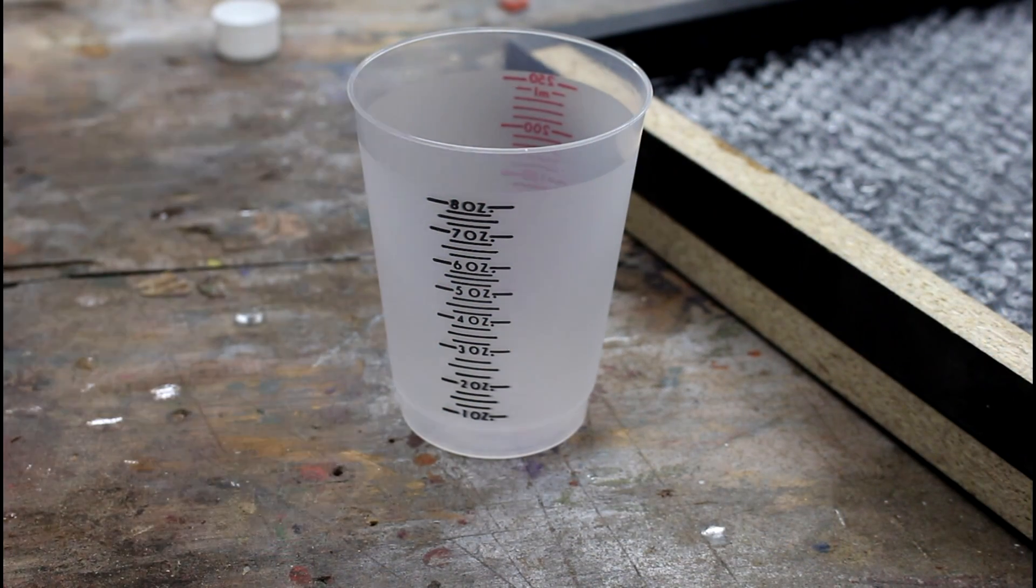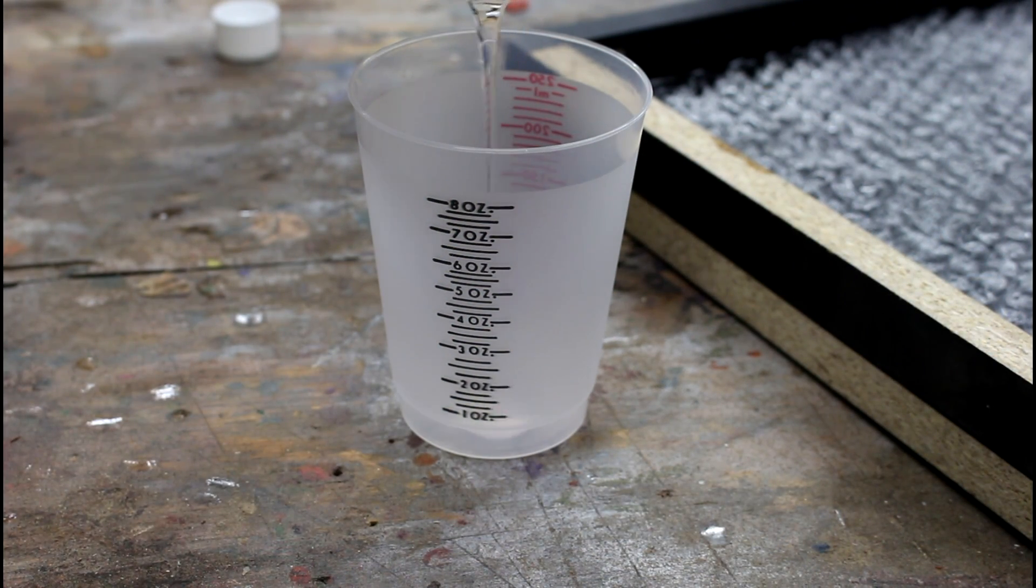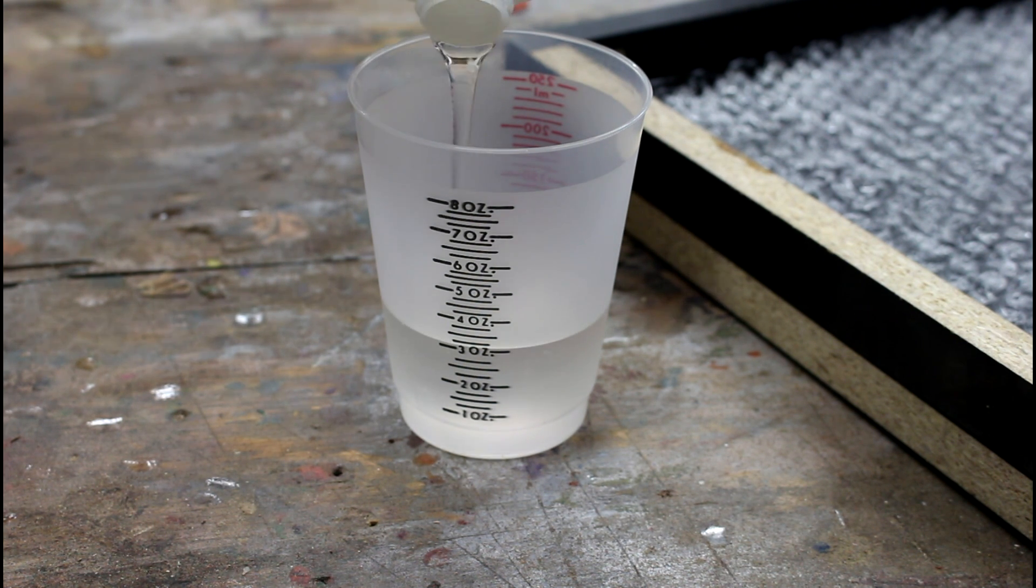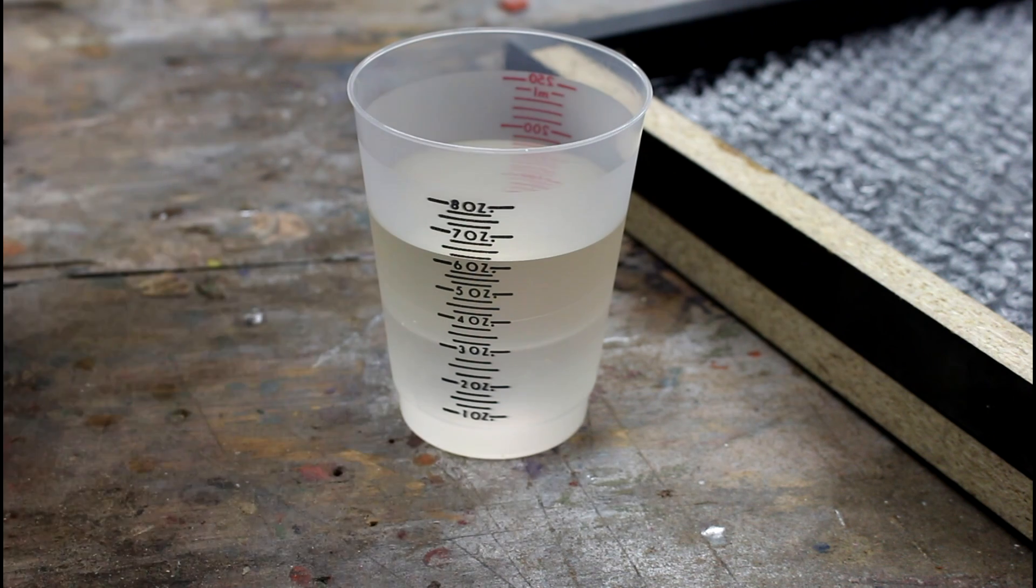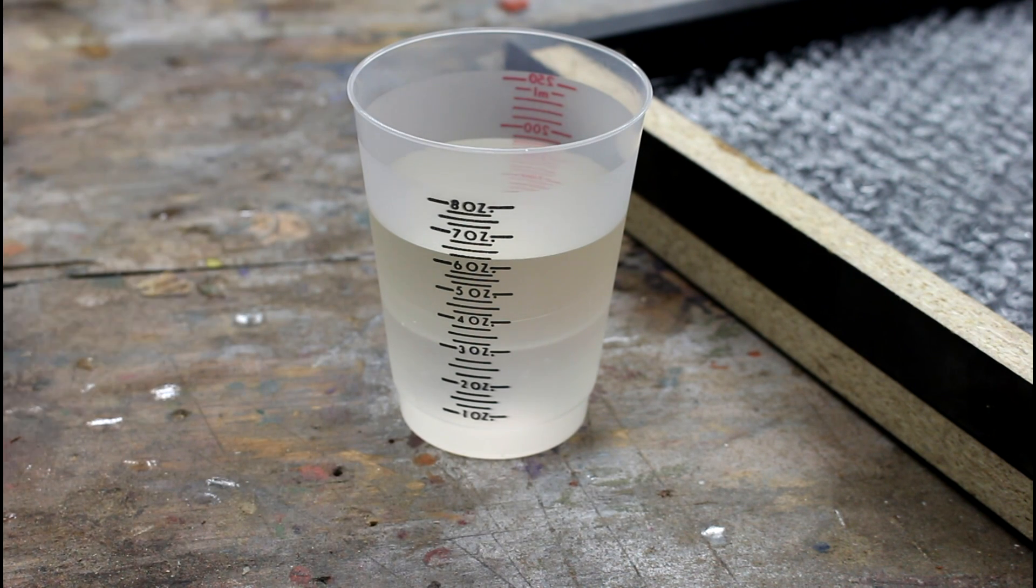I'm going to mix up six ounces of resin, which should be more than enough to cover this. My mold is 12 by 12 by 1, so it's pretty good size. But considering how much I've been using in past projects, I'm thrilled to just have an eight ounce resin project.